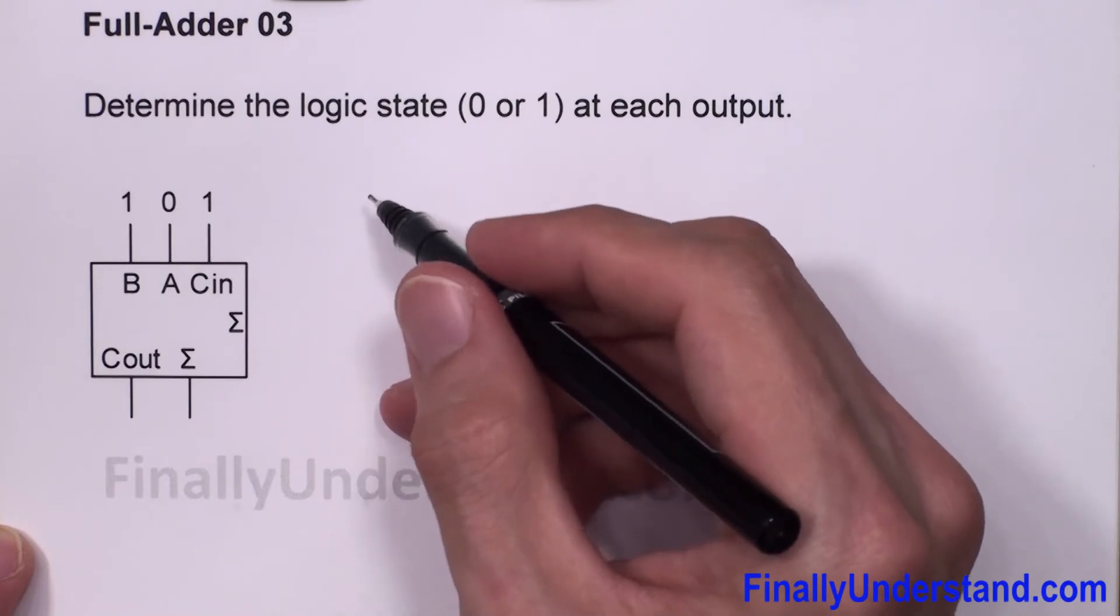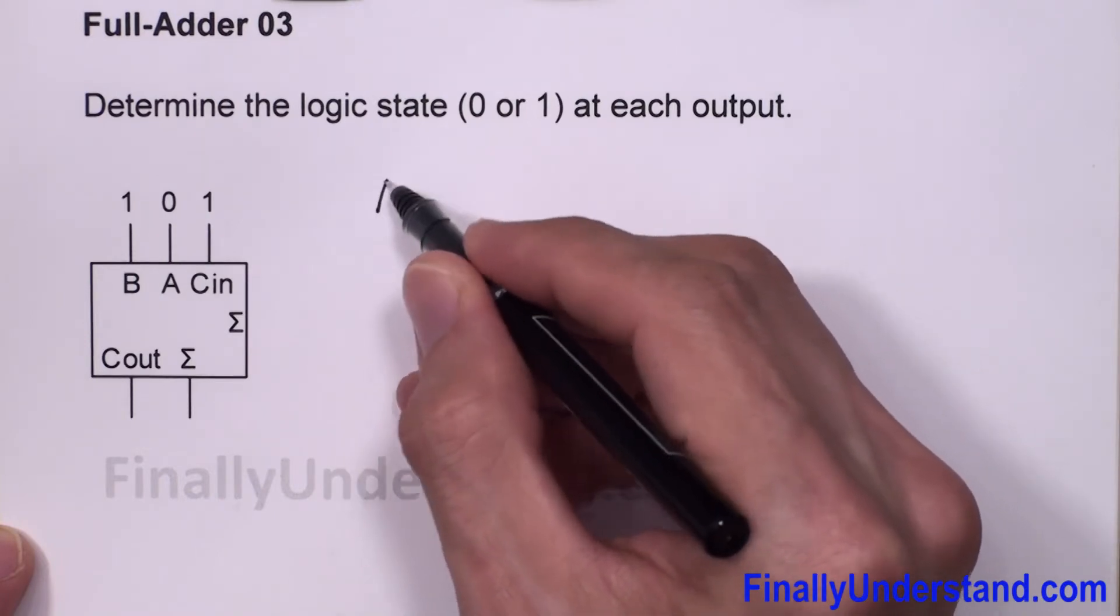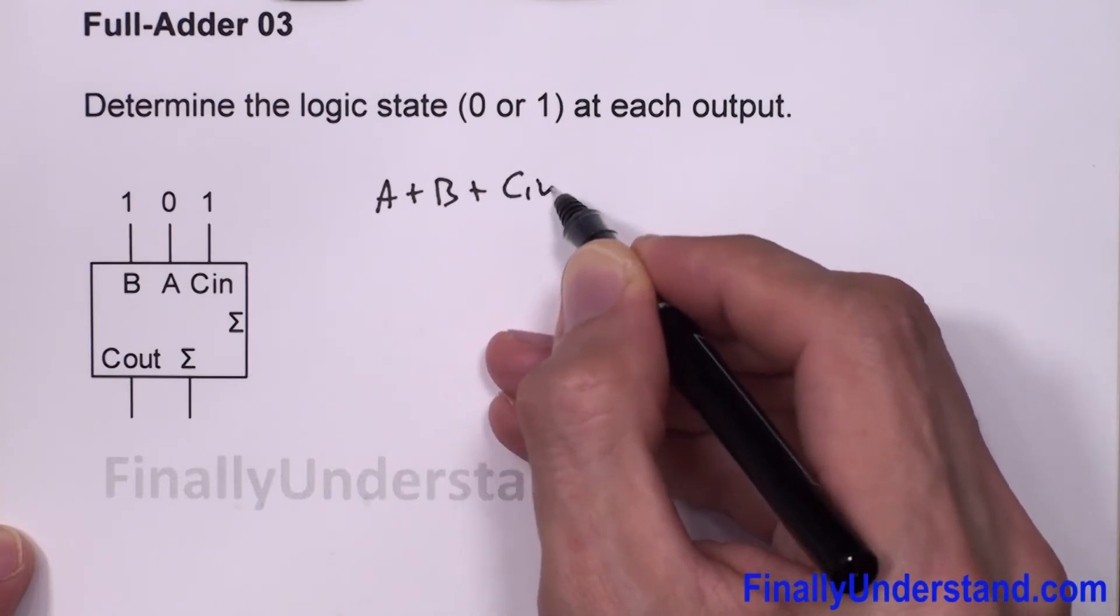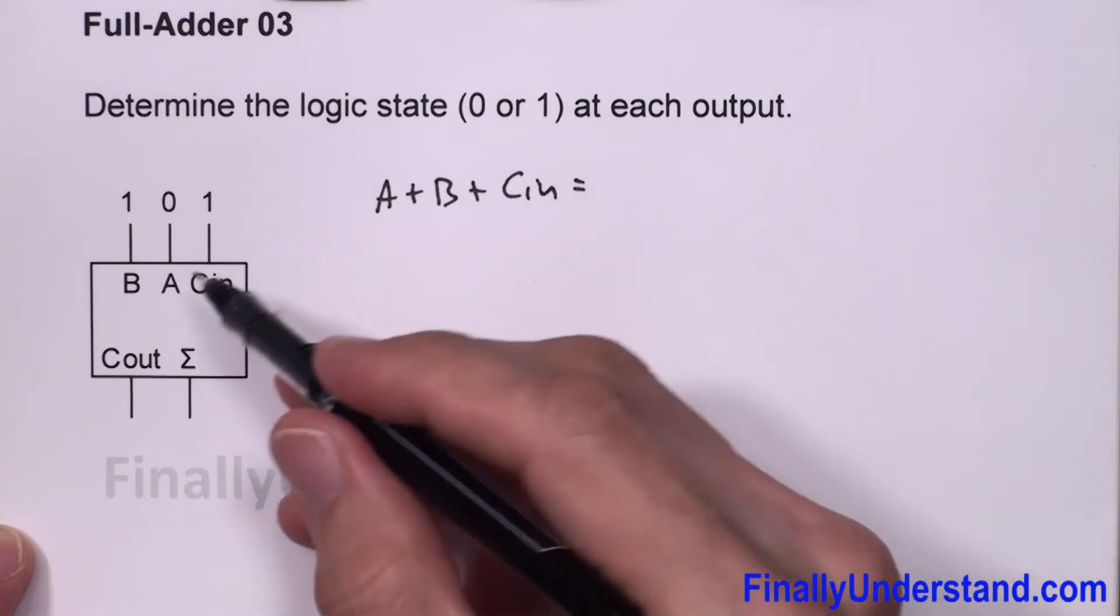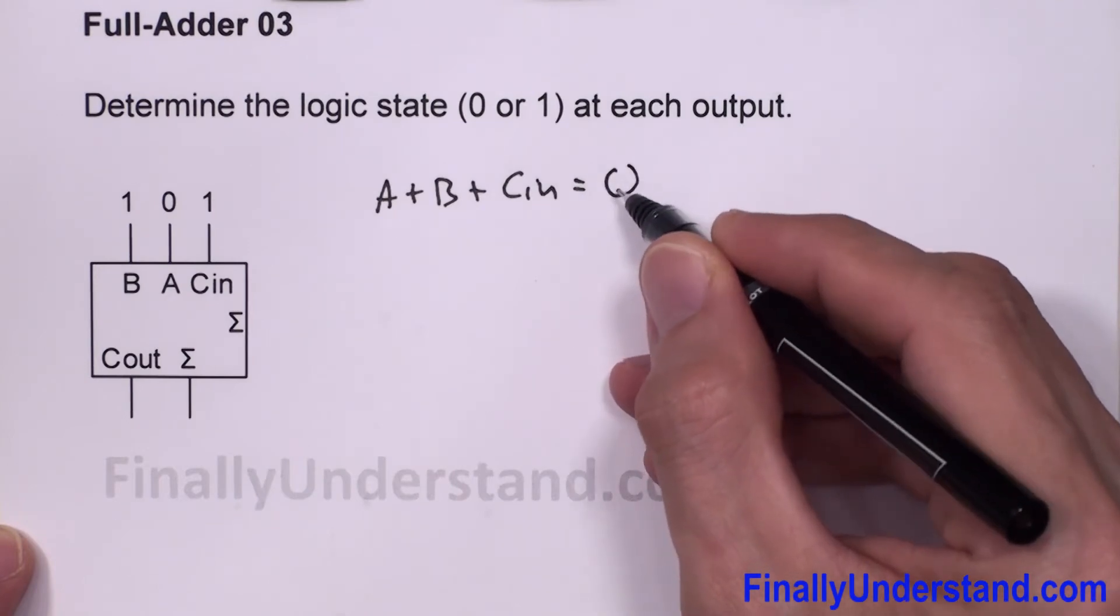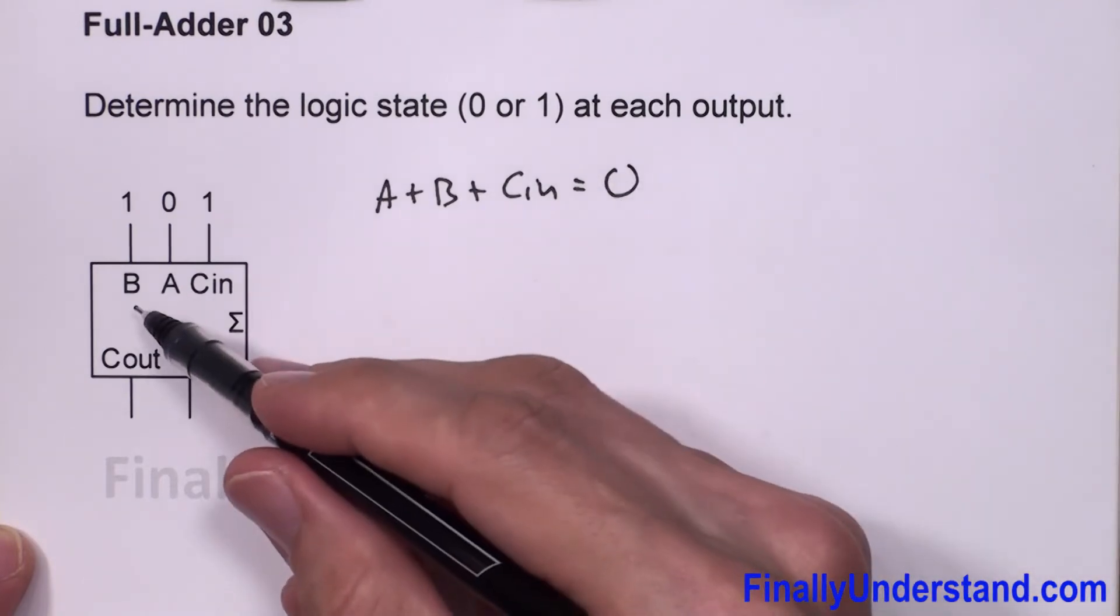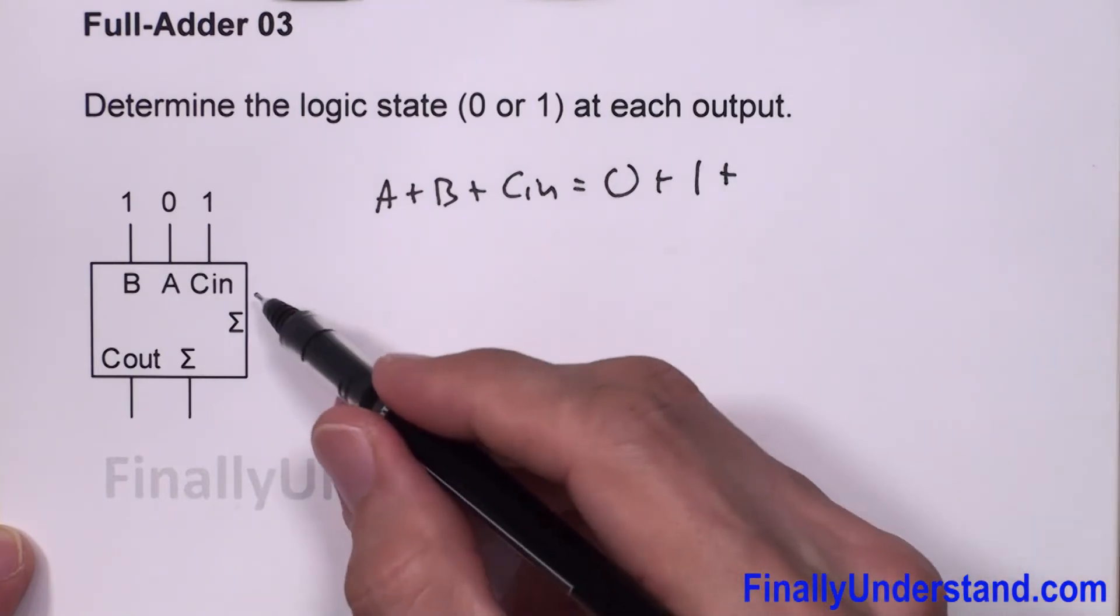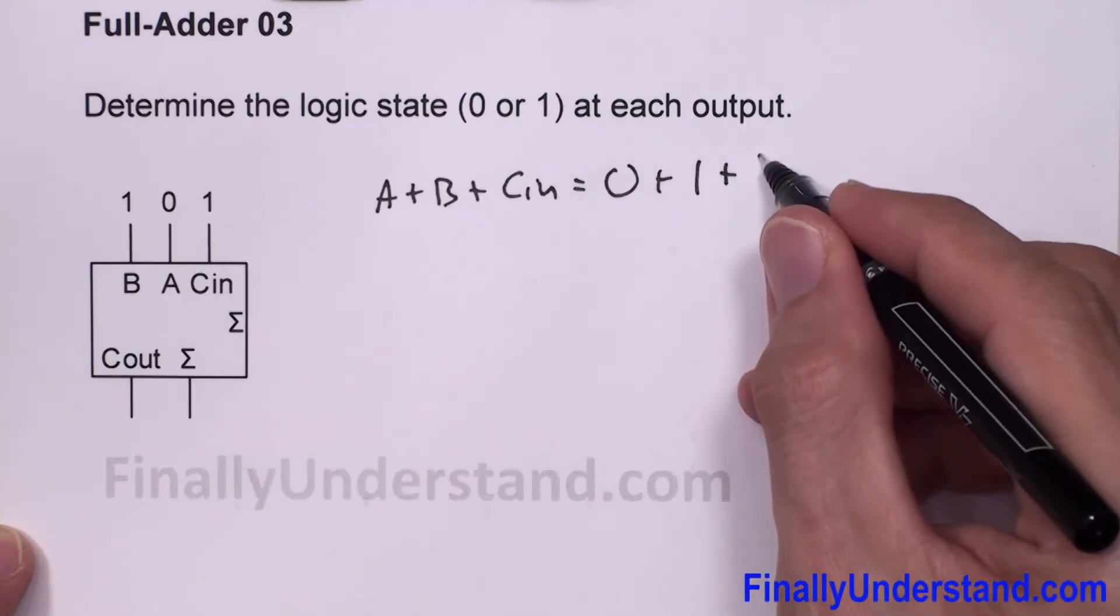So how are we supposed to analyze it? Simply write the formula: A plus B plus carry in. So my A is equal to zero, I have B equals one, and carry in is equal to one.